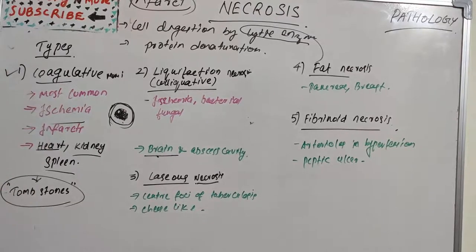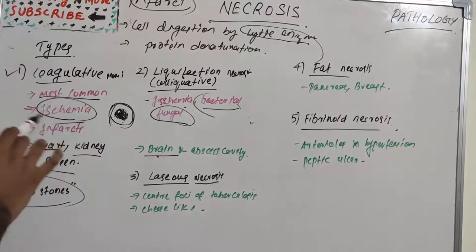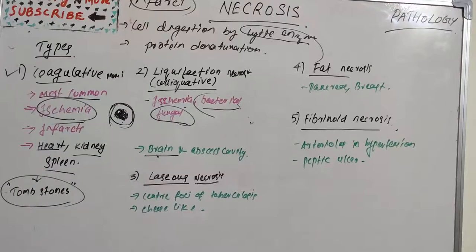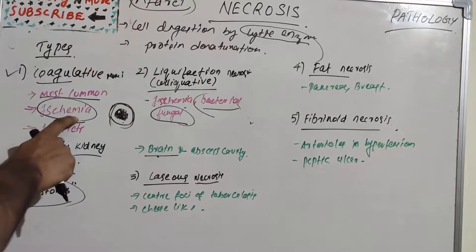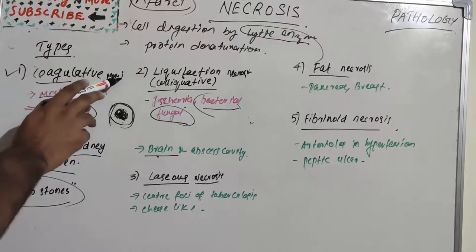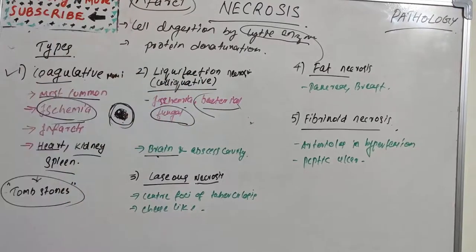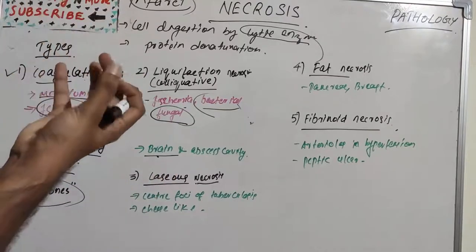Liquefaction necrosis is due to ischemic injury and bacterial or fungal infection. This is where the degradation of tissue occurs by the action of powerful hydrolytic enzymes. In coagulative necrosis the hydrolytic enzymes were not active so structural integrity was maintained; here they completely destroy the area. Common examples include infarct cavities of the brain. The tissue is completely digested, resulting in transformation into a liquid viscous mass with no structural integrity.